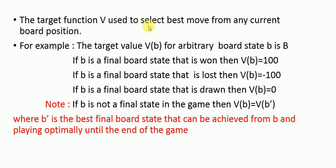The target function V is used to select the best move from any current board position. For example, the target value V(B) for an arbitrary board state B is defined as: if B is a final board state that is won, then V(B) equals 100; if B is a final board state that is lost, then V(B) equals minus 100; if B is a final board state that is drawn, then V(B) equals 0; if B is not in the final state, then V(B) equals V(B'), where B' is the best final board state achievable from B by playing optimally until the end of the game.